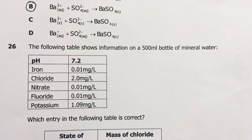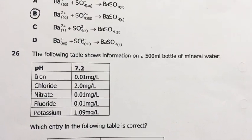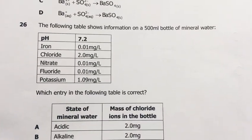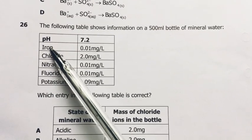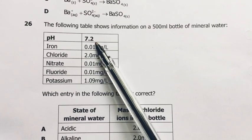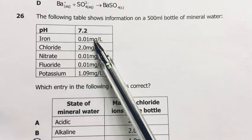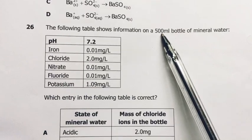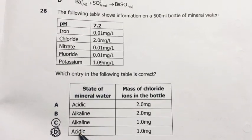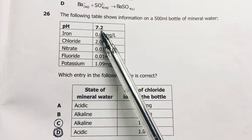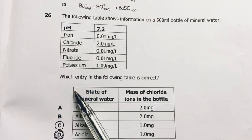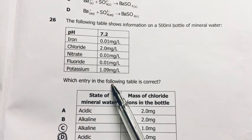Number 26, the following table shows information on a 500ml bottle of mineral water. Which entry in the following table is correct? So in 500ml, this is half a liter, pH 7.2, this is the pH of the water bottle, slightly alkaline, very slightly, 7.2. Quantities per liter, look at this, per liter, grams per liter. But this bottle is actually half a liter. So which entry in the following table is correct? My answer was C.